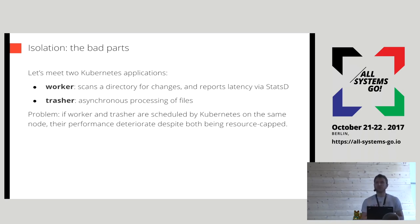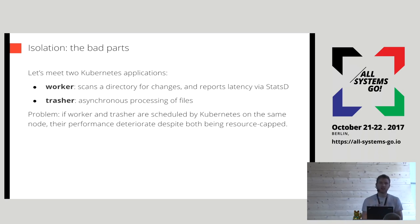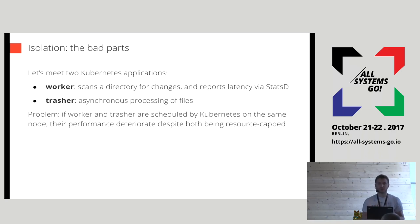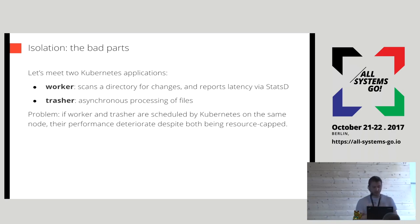So we started studying the behavior. The two applications are called Worker and Thrasher. The Worker is a simple watchdog application that every few seconds scans a directory for files and reacts if the metadata of those files changes. It also reports the duration of this watchdog check as a metric, so we can inspect and alert on it. The Thrasher application does asynchronous processing of files. The problem is: if these two containers get scheduled on the same host by Kubernetes, even if they are completely resource-constrained, the performance suffers.